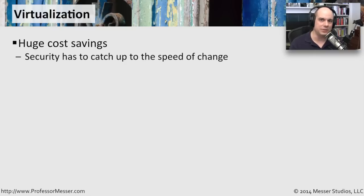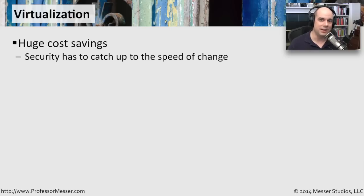We're seeing virtualization on file servers. We're seeing virtualization on huge systems that are put in place — you buy one big monster server that can now hold 100 or more different servers inside of it. There's cost savings on the purchase of the hardware, the place you would put it in your data center, the cooling systems, and the maintenance of the system.